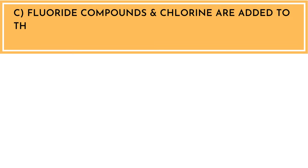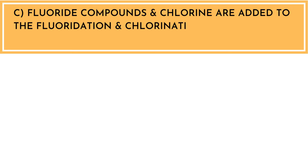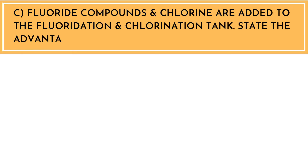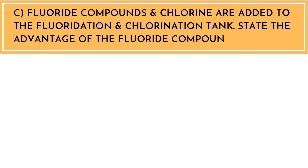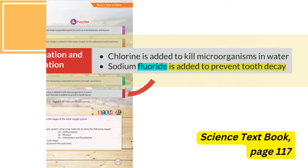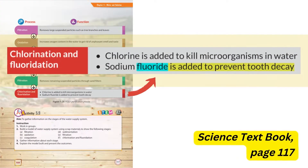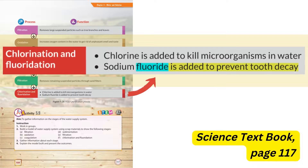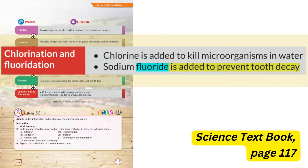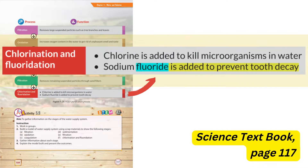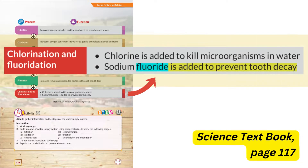Next sub-question: Fluoride compounds and chlorine are added to the fluoridation and chlorination tank. State the advantage of the fluoride compounds. For the answer, we can refer to the textbook, page 117. In the chlorination and fluoridation process, sodium fluoride is added to prevent tooth decay.